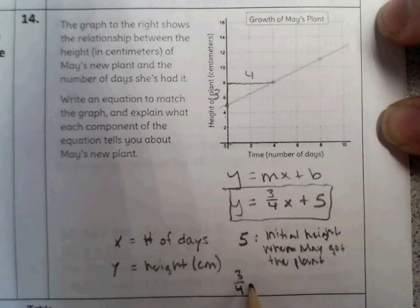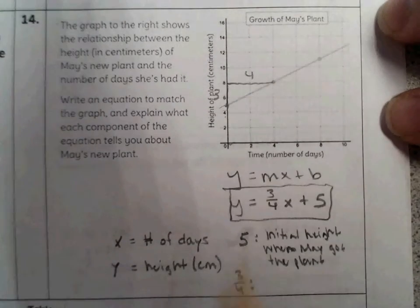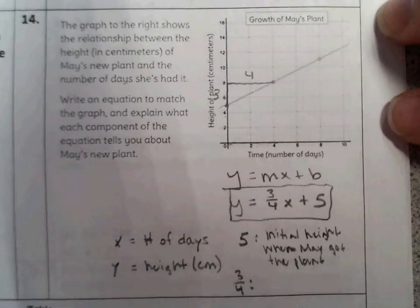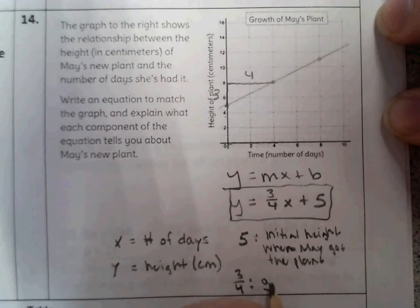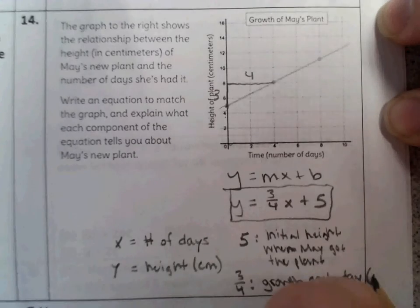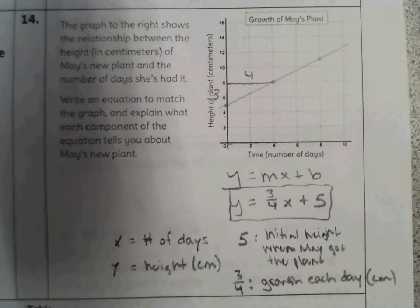And the 3 fourths. That's how much it grows per day, because linear is growing the same amount each day. So we could say that it's growing 3 fourths of a centimeter every day. So I'm just going to put growth each day. And again, that's in centimeters. So the 3 fourths is the amount growing each day. The 5 is the amount it started at when she first bought the plant. The height at least. And then we know that x is the number of days and y is the height total.